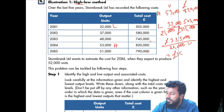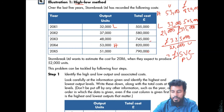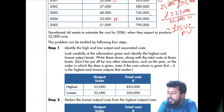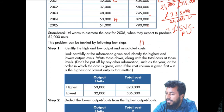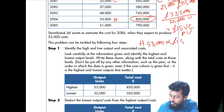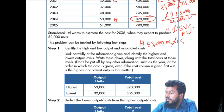That gives you 15 per unit, which is the variable cost per unit. Now that you have the variable cost per unit, you can get the total variable cost. Take the highest activity level, which is 53,000 units. The total cost given is 820,000, and the variable cost per unit is 15, so 15 times 53,000 equals 795,000. That is your total variable cost.